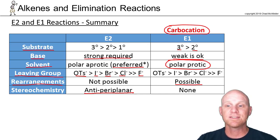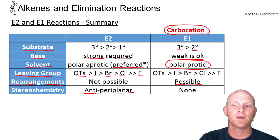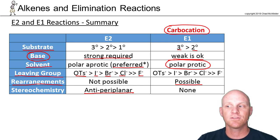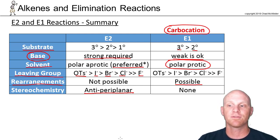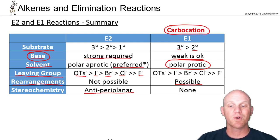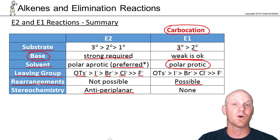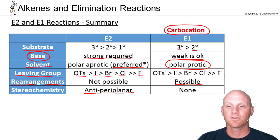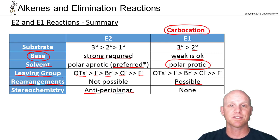The single biggest difference between E2 and E1 is going to be all about the base: strong base for E2, weak base for E1. The substrate differences are minimal. The solvent difference — protic versus aprotic — is not as big a deal as you might think, since we do E2 reactions in protic solvents all the time. The leaving group trends are the same.